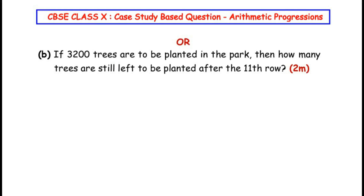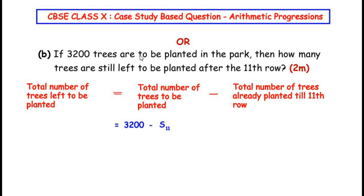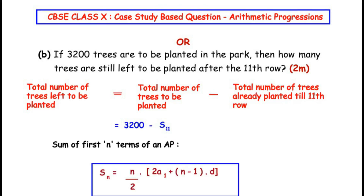The 'or' question asks: if 3200 trees are to be planted, how many trees are still left to be planted after the 11th row? The equation is: trees left = total trees − trees already planted up to the 11th row, i.e., 3200 − S11.